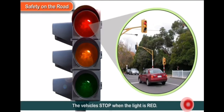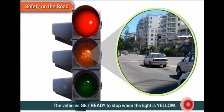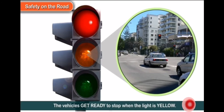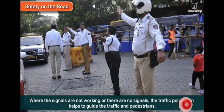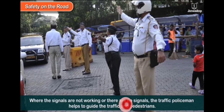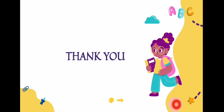You all know this. Red means stop. Yellow means get ready to stop, or wait. Green means move. Where signals are not working or there are no signals, the traffic police will help us.